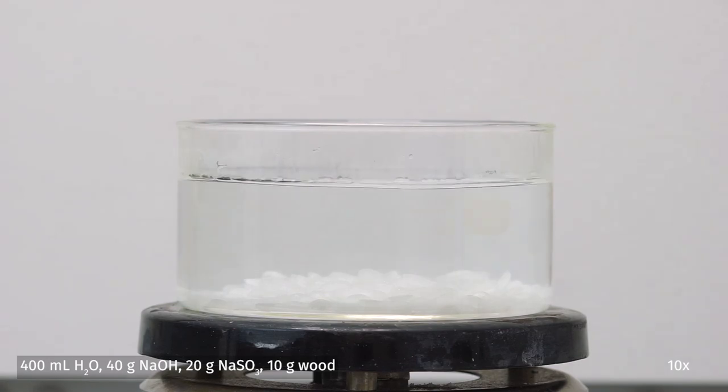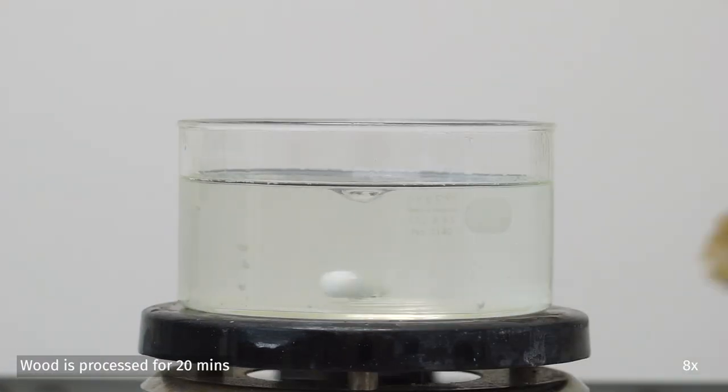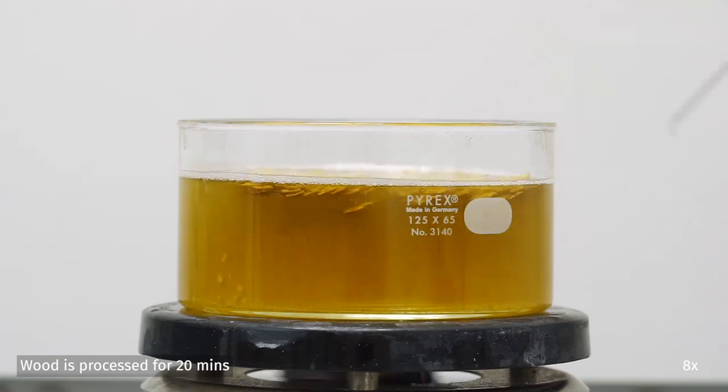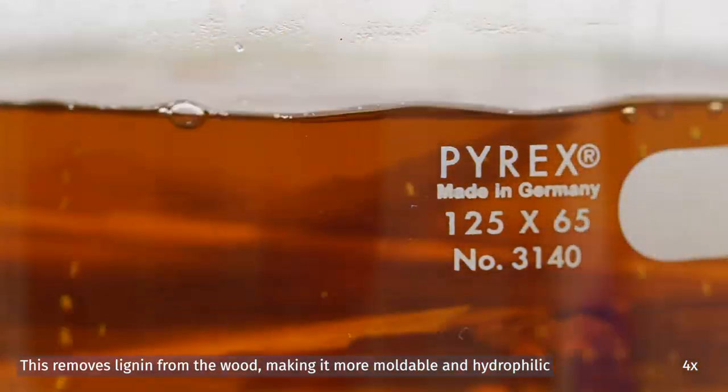For the chemical process, sodium hydroxide and sodium sulfite are dissolved in water. The wood blanks are added and boiled for 20 minutes. This process removes lignin from the wood, making it more moldable and more hydrophilic.